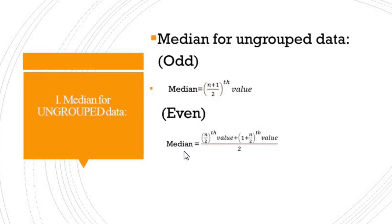For even observations, the formula used is: Median = ((n/2)th value + (n/2 + 1)th value) / 2. These two cases are used for ungrouped data to find the median.